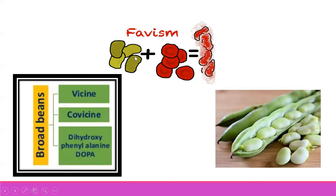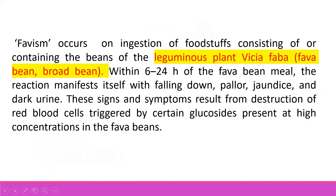Here in this picture, you can see the fava bean. The protein present in the fava bean reacts with the red blood cells and causes their destruction. These beans contain toxins like vicine, convicine, and dihydroxyphenylalanine, that is DOPA. Favism occurs on ingestion of foods containing DOPA. Within 6 to 24 hours of consuming fava beans, the reaction manifests itself with the person falling down, fainting, experiencing pain, and jaundice occurs due to the destruction of red blood cells, and dark urine is also passed. These signs and symptoms result from the destruction of red blood cells triggered by certain glucosides present at high concentration in fava beans.